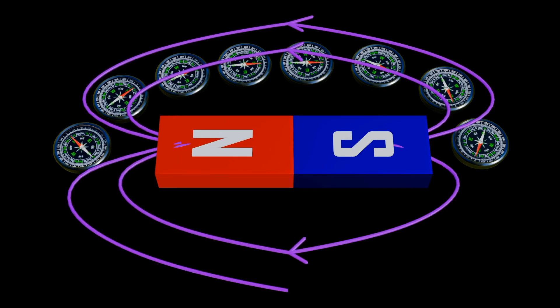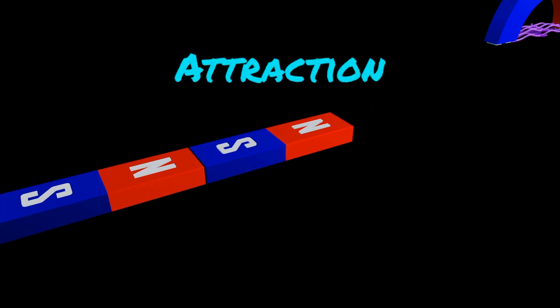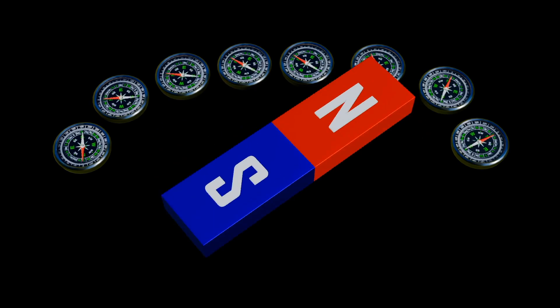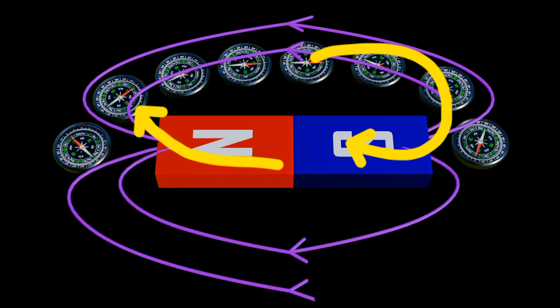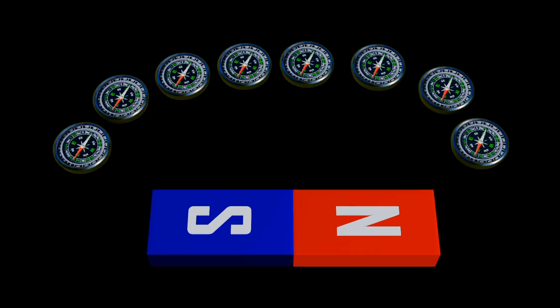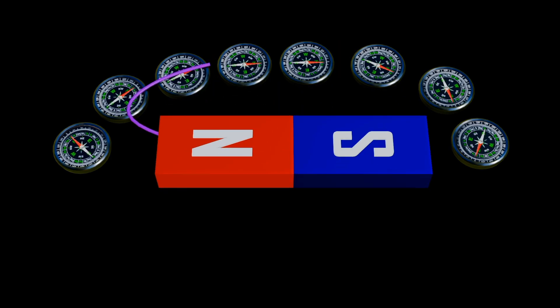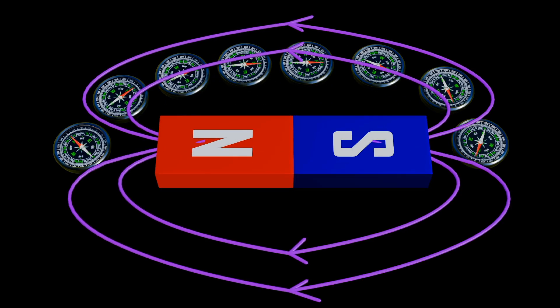Taking a bar magnet, it contains a south and north pole. Unlike poles attract while like poles repel. We can know the direction of magnetic fields around a bar magnet using a compass — the compass aligns its needle with those fields. Basically, the direction of magnetic field around a magnet is from north to south.